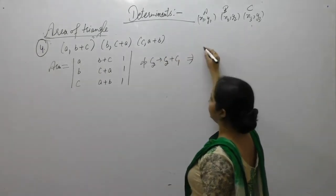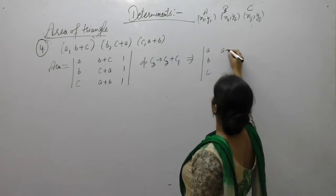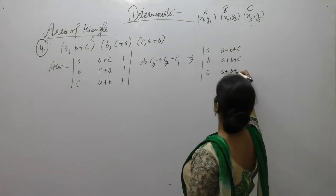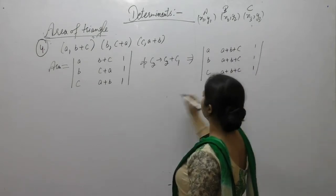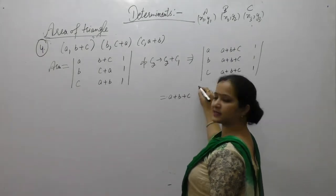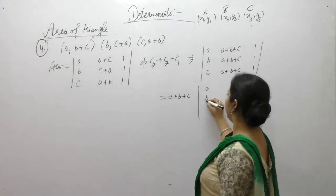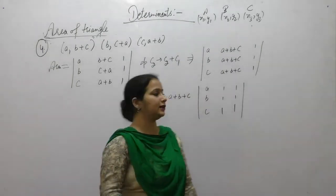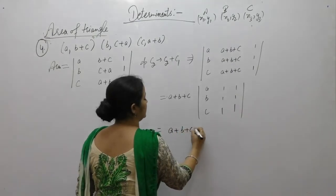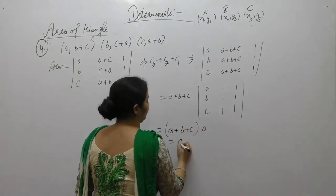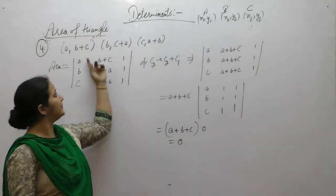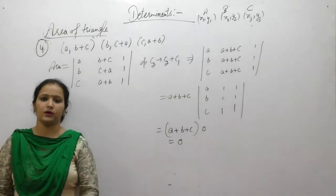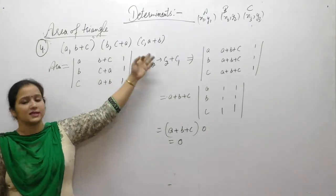After the column operation C2 → C2 + C1, the second column becomes (a+b+c, a+b+c, a+b+c). Take (a+b+c) common from the second column. The resulting determinant has two identical columns (both equal to (1,1,1)), therefore this determinant has value 0. So if the determinant has value 0, then area equals 0, which means these three points are collinear.